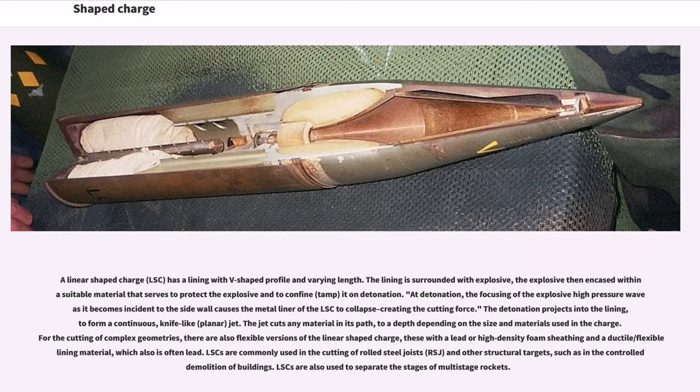There are several different forms of shaped charge. A linear shaped charge, LSC, has a lining with V-shaped profile and varying length. The lining is surrounded with explosive, the explosive then encased within a suitable material that serves to protect the explosive and to confine, or tamp, it on detonation. At detonation, the focusing of the explosive high-pressure wave as it becomes incident to the sidewall causes the metal liner of the LSC to collapse creating the cutting force. The detonation projects into the lining to form a continuous, knife-like, planar jet. The jet cuts any material in its path, to a depth depending on the size and materials used in the charge. For the cutting of complex geometries, there are also flexible versions of the linear shaped charge, these with a lead or high-density foam sheathing and a ductile/flexible lining material, which also is often lead. LSCs are commonly used in the cutting of rolled steel joists, RSJ, and other structural targets, such as in the controlled demolition of buildings. LSCs are also used to separate the stages of multi-stage rockets.